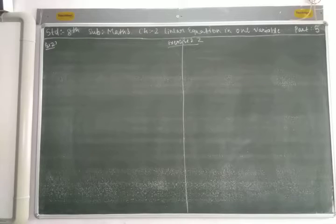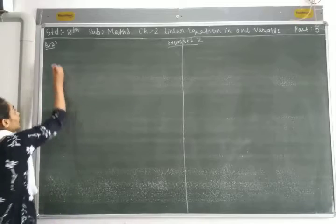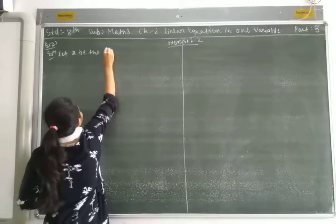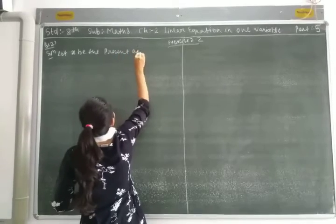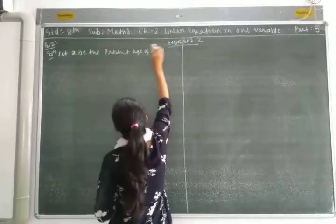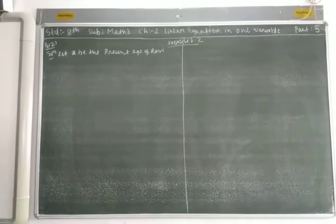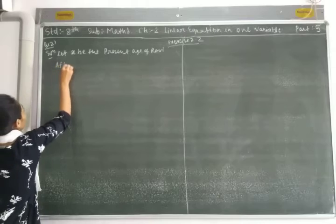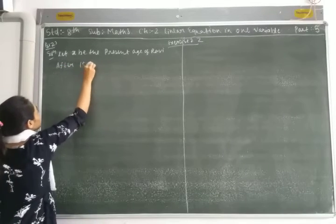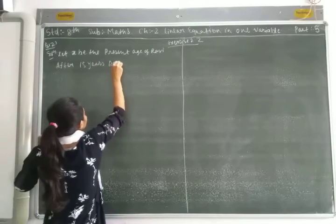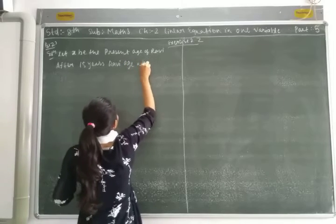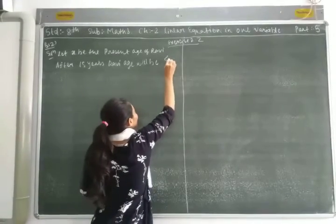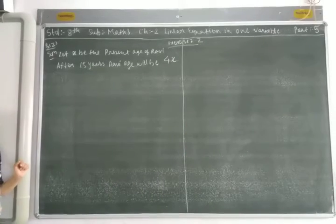We don't know Ravi's present age. Let x be the present age. After 15 years, Ravi's age will be 4 times his present age. So his age after 15 years will be 4 times x, which is 4x.